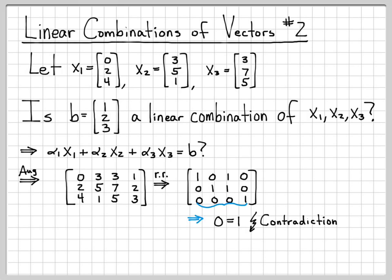Well, obviously, that is not true. That's what we call a contradiction. 0 is not equal to 1. So what this means is that this augmented matrix does not have a solution. I cannot solve this augmented matrix. There is no solution.